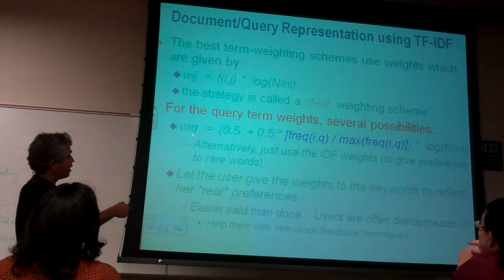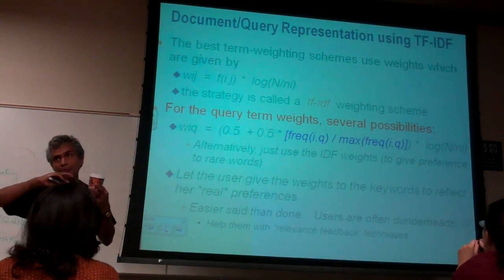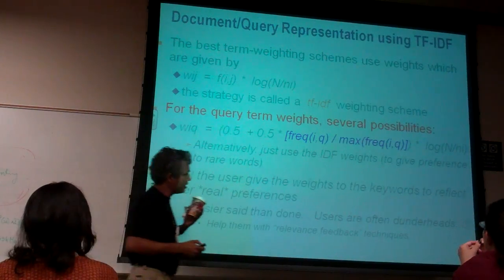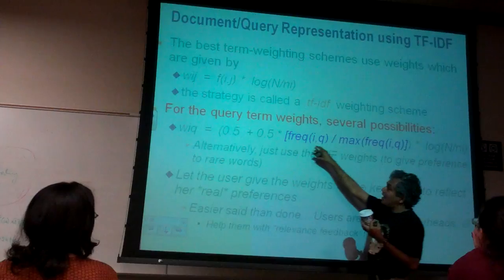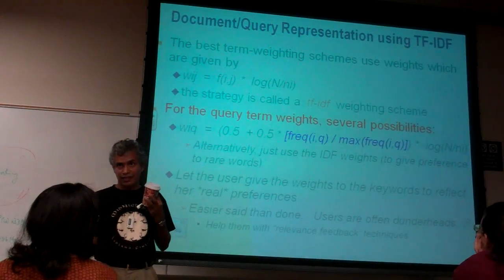So the way the queries' weights are computed, remember that normal weights are computed TF times IDF. So the query weight, this is the IDF part. But for the TF part, they are realizing that some words may not even exist in the query.